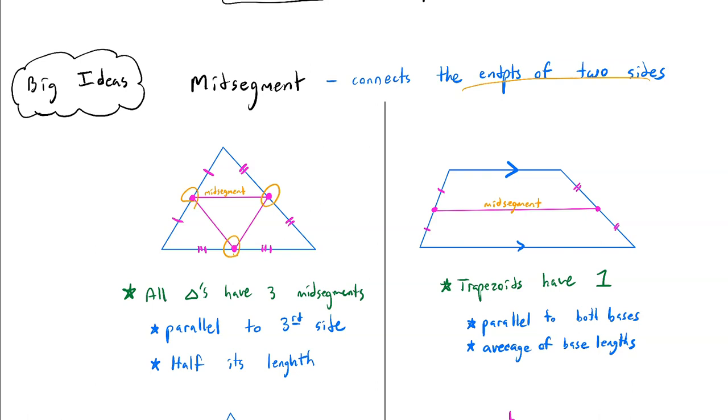So there's three midsegments in every triangle. And then in a trapezoid, we only talk about the midsegment connecting the legs. We don't talk about the midsegment connecting these two sides or connecting the base to the base. But technically, there are a lot more midsegments in this shape. The only one of interest to us is the one that goes between the two legs. So I just wrote trapezoids only have one, although technically they have a lot. There's only one interesting one for us.